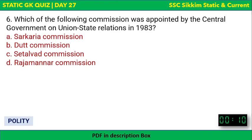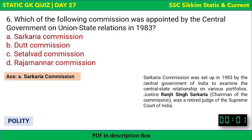Now we move to polity — a continuation from day 26. First question: Which commission was appointed by the central government on union-state relations in 1983? Options are Sarkaria Commission, Dutt Commission, Setalvad Commission, or Rajamannar Commission. The correct answer is the Sarkaria Commission. It was set up in 1983 to examine central-state relationships on various portfolios. Justice Ranjit Singh Sarkaria, a retired judge of the Supreme Court of India, was the chairman.